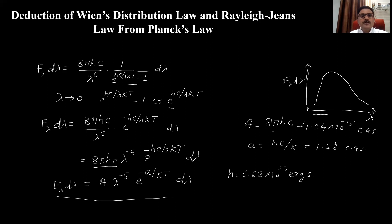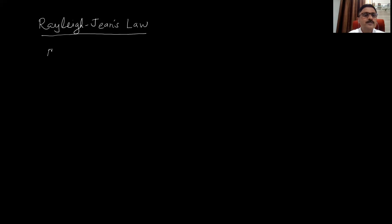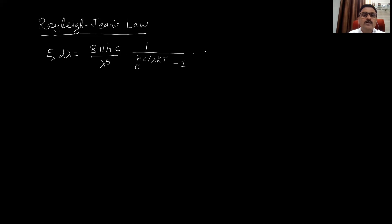Now we will discuss Rayleigh-Jean's law — we need to derive it using Planck's radiation law. We again start with Planck's radiation law: E_λ dλ = (8πhc / λ⁵) × (1 / (e^(hc/λkT) − 1)) × dλ. Rayleigh-Jean's law explains the behavior of the blackbody radiation spectrum at higher wavelength regions.